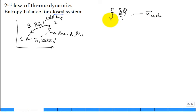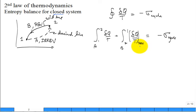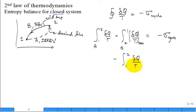We apply it for this process: going along path A from one to two, δQ over T, then from two back to one along path B, δQ over T — that equals negative sigma of the cycle. This is a two-process cycle: A from one to two, then B from two to one. But B is reversible. So you could rewrite it by turning it around — instead of two to one, go one to two, with δQ/T rev.